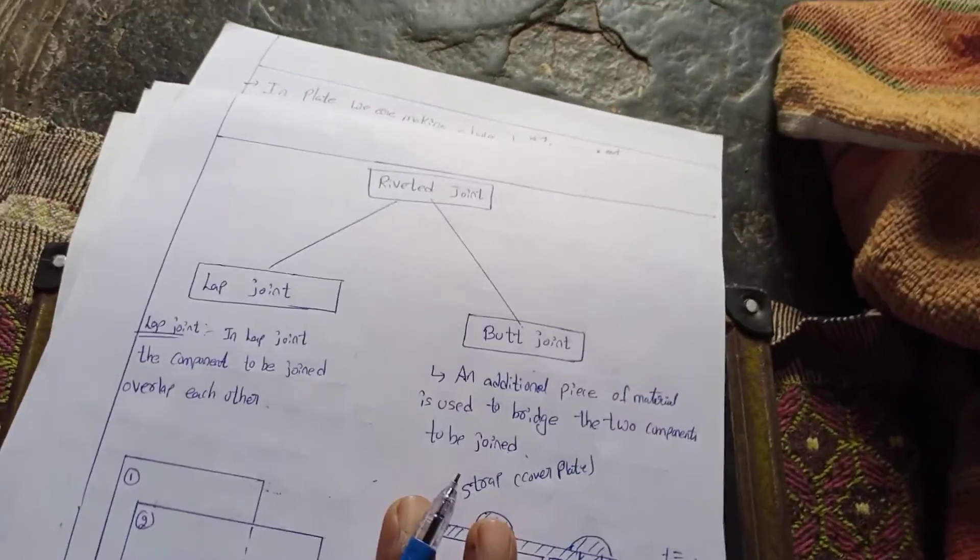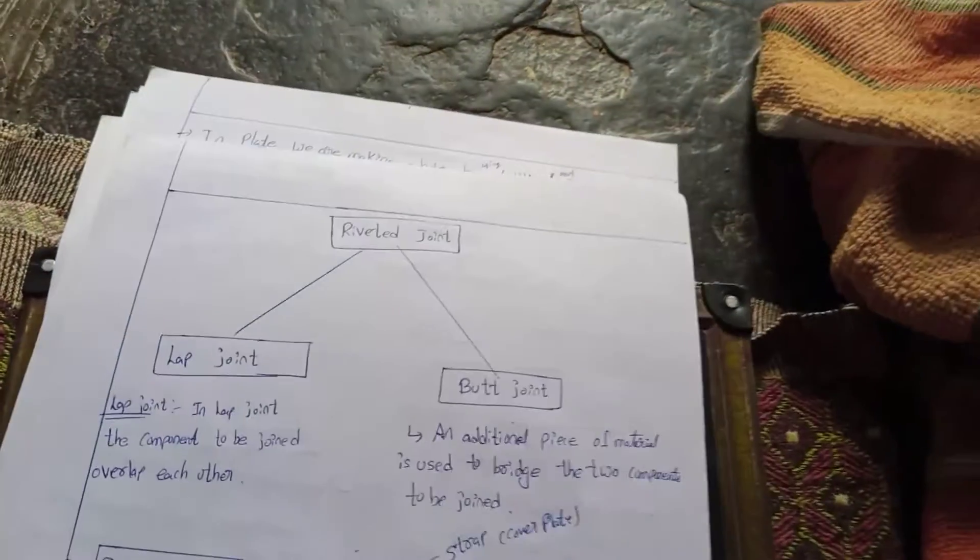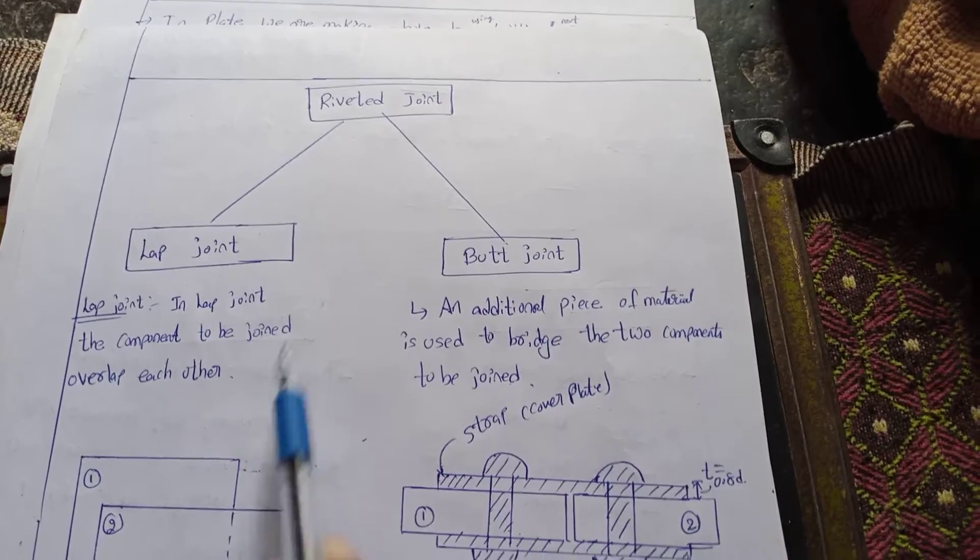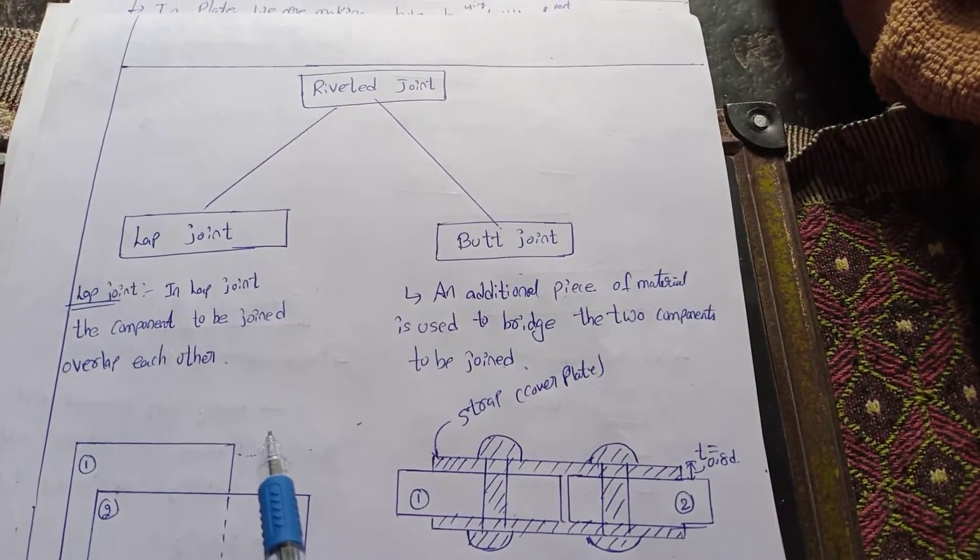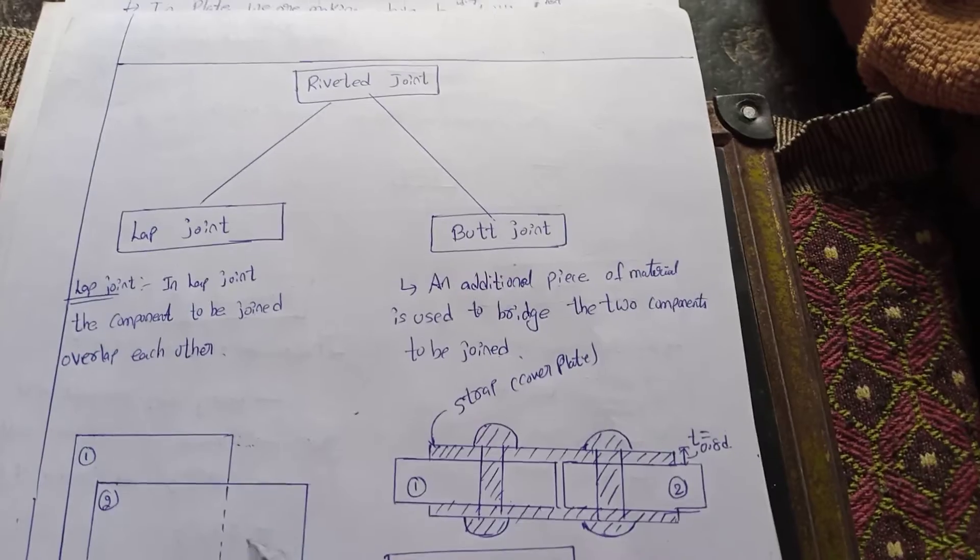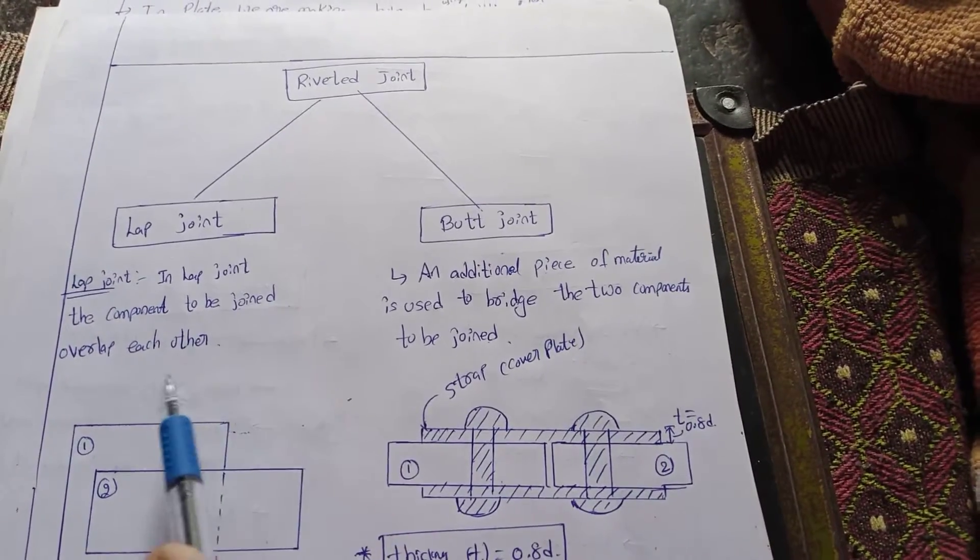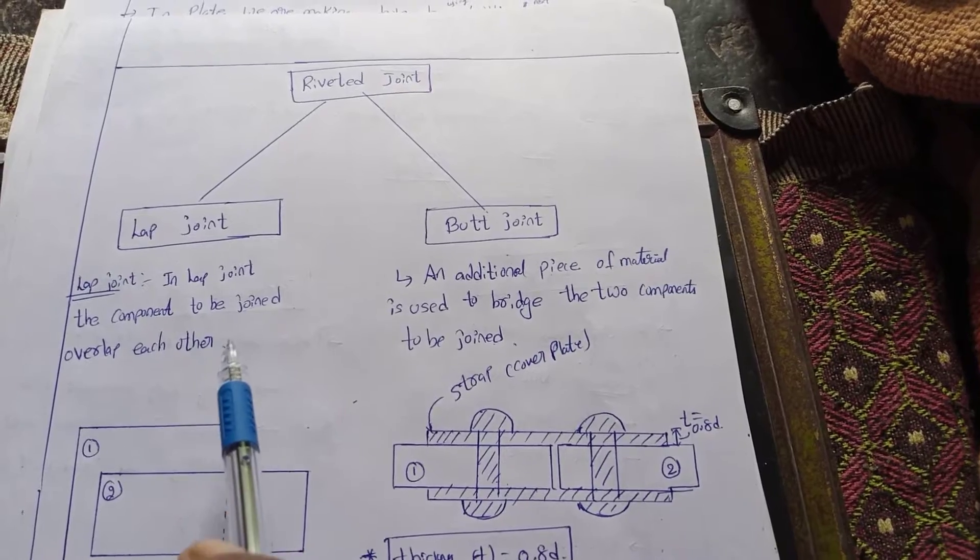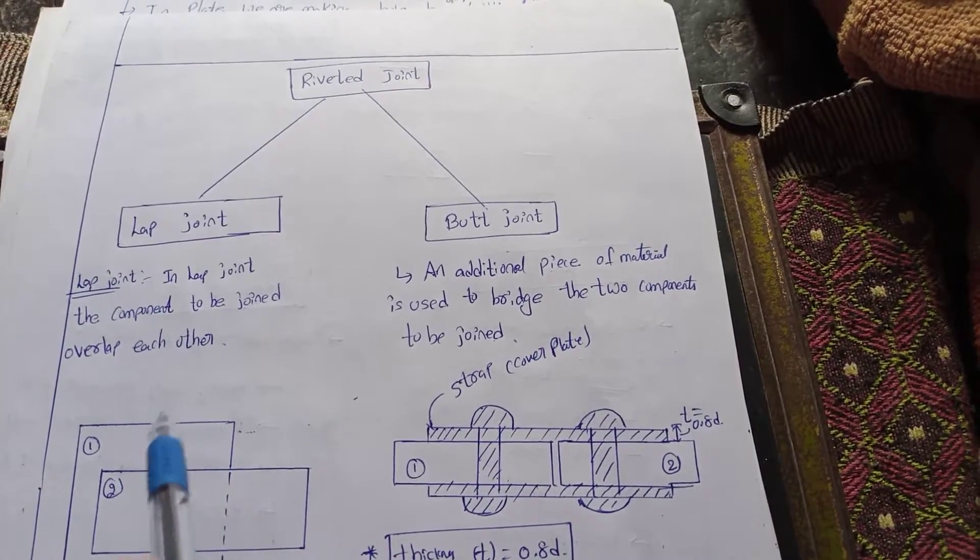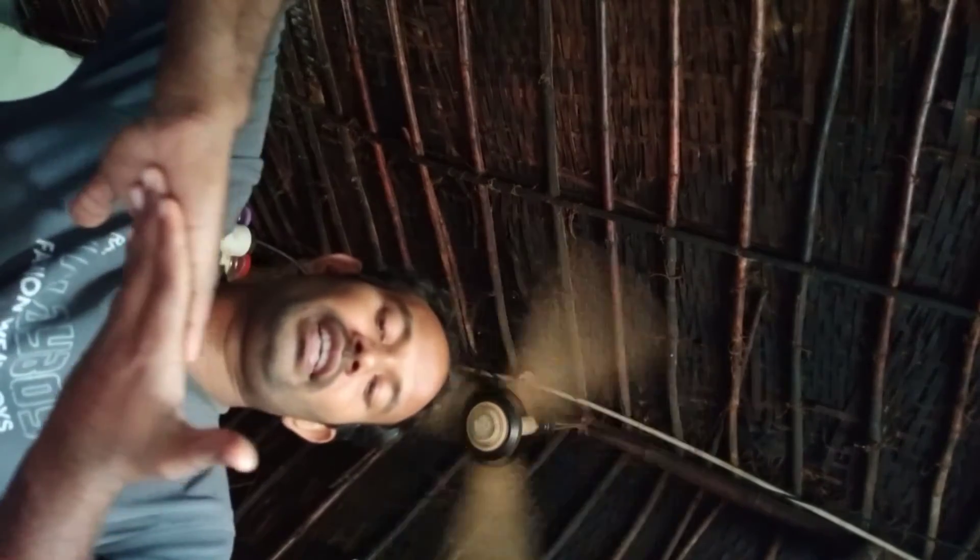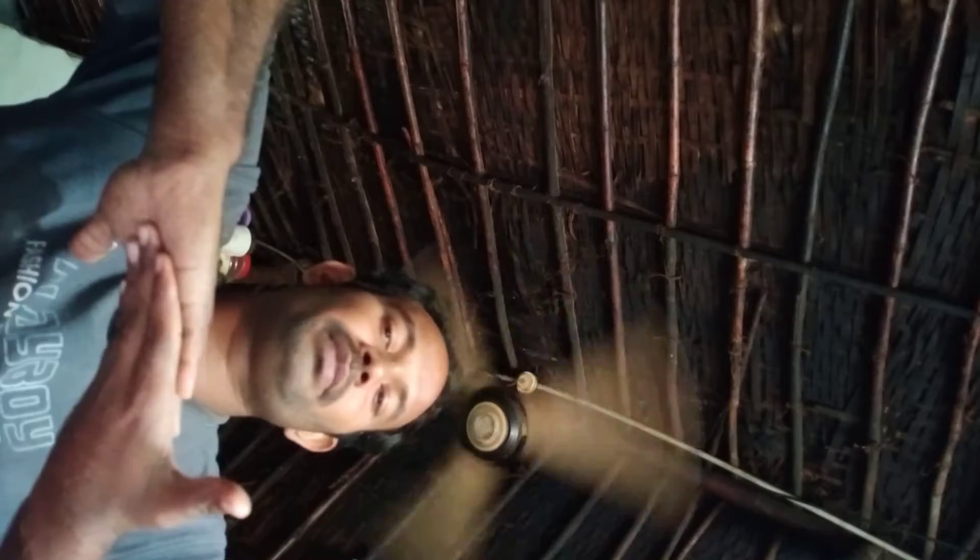There are two types of riveted joints: lap joint and butt joint. In lap joint, the components to be joined overlap with each other. For example, this is the plate overlapping - this is the lap joint.